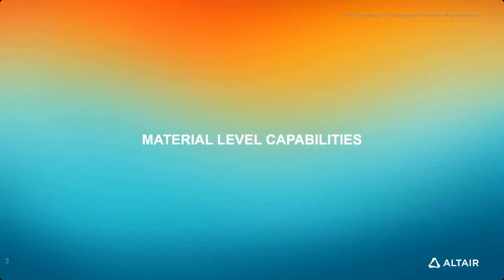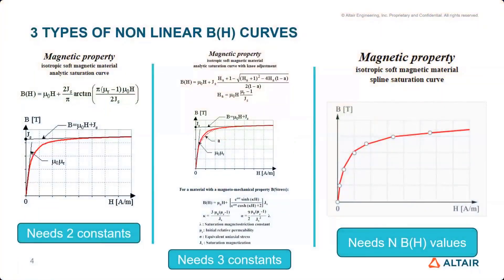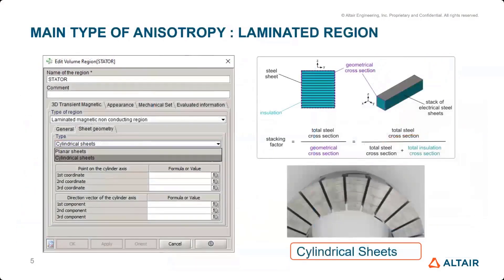We can start by looking at the different types of materials. To take into account saturation, we have multiple types of nonlinear BH properties. You can use either the two or three coefficient analytical models, or you can enter the BH property using the full spline of the BH curve with all the points. The main type of anisotropy we'll consider will be the laminated regions. You can indicate cylindrical or planar laminations, indicate the direction of these laminations, as well as the stacking factor, and that will be taken into account during the solving.